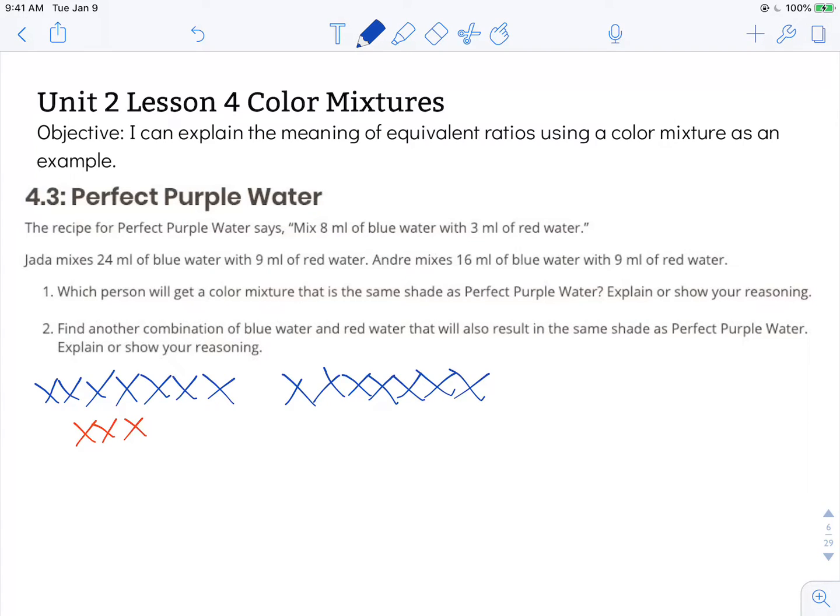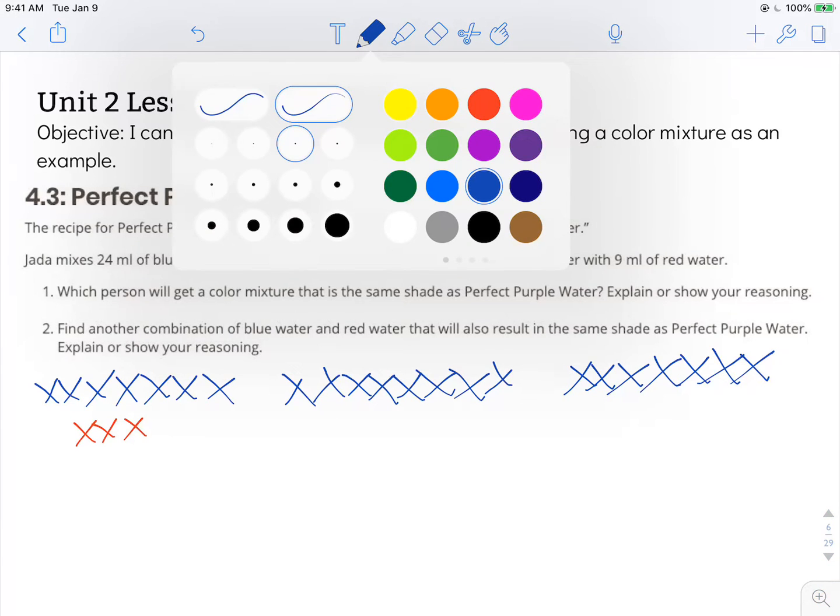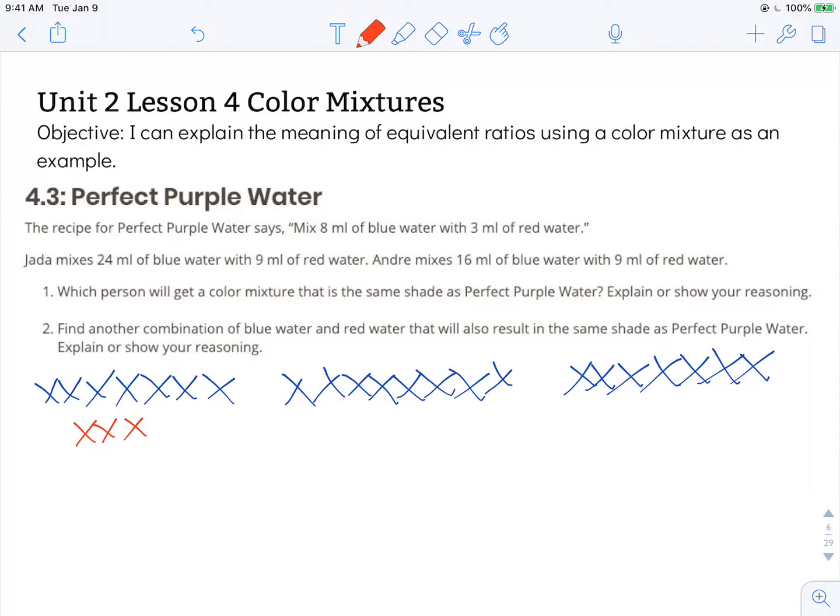1, 2, 3, 4, 5, 6, 7, 8. 3 groups of 8 and then she has 9 milliliters of water and that happens to be 3 groups of 3. So you can see that Jada has just tripled the recipe. She's just made three times as much of this perfect purple water.